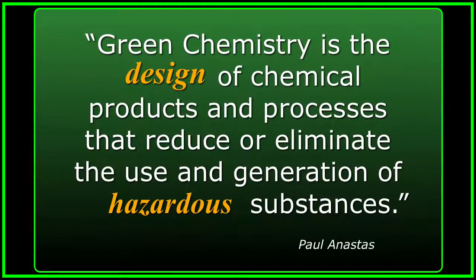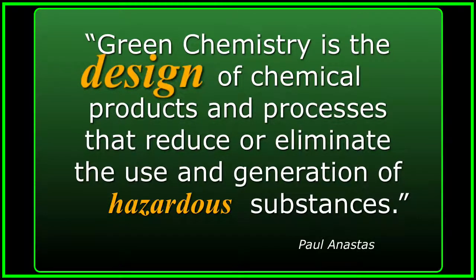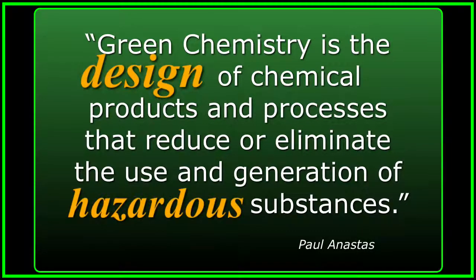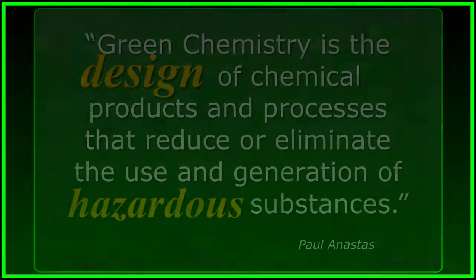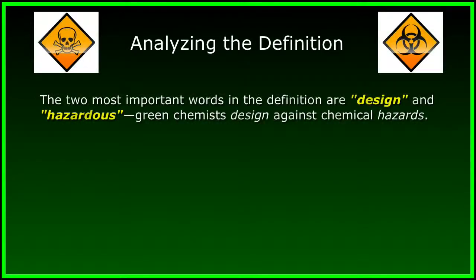Here is the key definition of green chemistry: Green chemistry is the design of chemical products and processes that reduce or eliminate the use and generation of hazardous substances. The definition was produced in the early to mid-90s by Dr. Paul Anastas. The two most important words in the definition are design and hazardous. Green chemists design against chemical hazards. It's that simple.